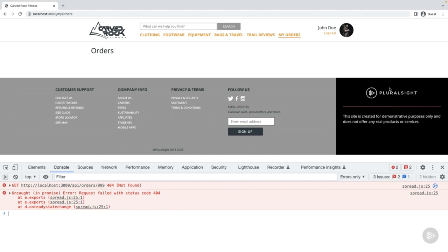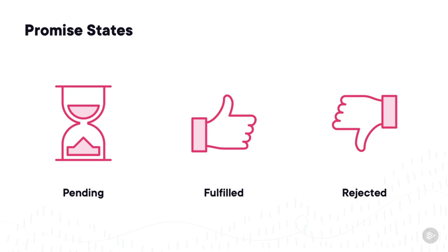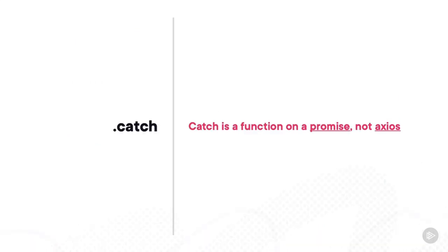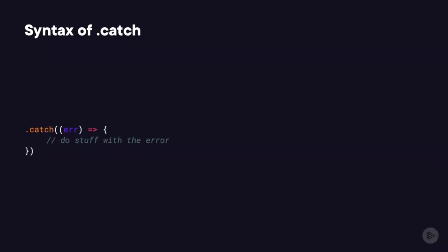The first error is that orders/999 is not found — that's expected, since we're trying to get a record that didn't exist. The second is an uncaught error in a promise. Remember that a promise can have three states. In the last clip we dealt with the fulfilled state, but this time the promise didn't succeed, so we have to deal with the rejected state. Just as fulfilled has its own function, the rejected state does as well — instead of using then, we need to use catch. It's important to note that catch is a promise function, not an Axios function.